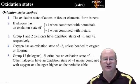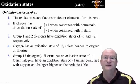Looking at the halogens, fluorine has an oxidation state of minus one. This is fixed. The other halogens have an oxidation state of minus one unless they are combined with oxygen or a halogen higher on the periodic table.